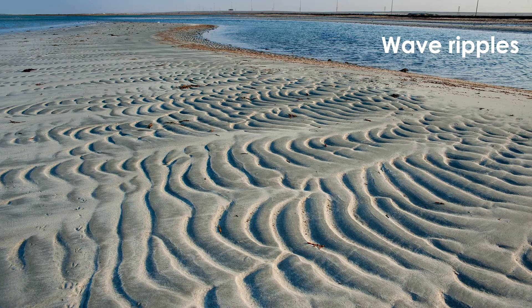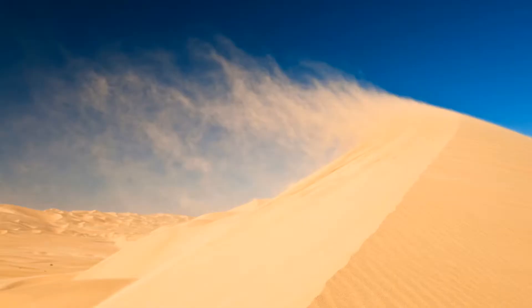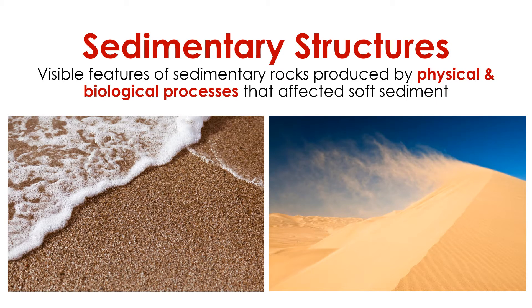Have you ever seen ripples on the beach? It doesn't take much to imagine that these ripples are created by waves and tides as they roll over the shoreline. Ripples and sand dunes both form through natural forces that transport sediment grains over great distances. These natural forces, including moving water and wind, affect how sediment is ultimately deposited in the environment where it will become sedimentary rock. We can observe the direct consequences of these natural forces in the form of sedimentary structures.